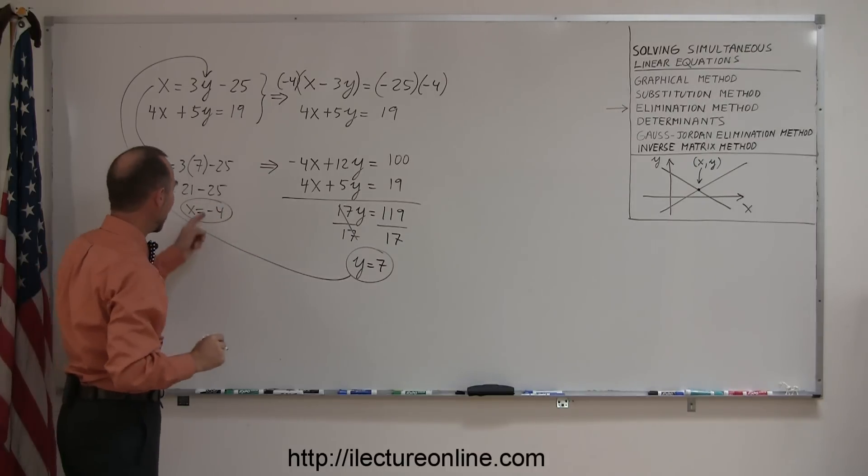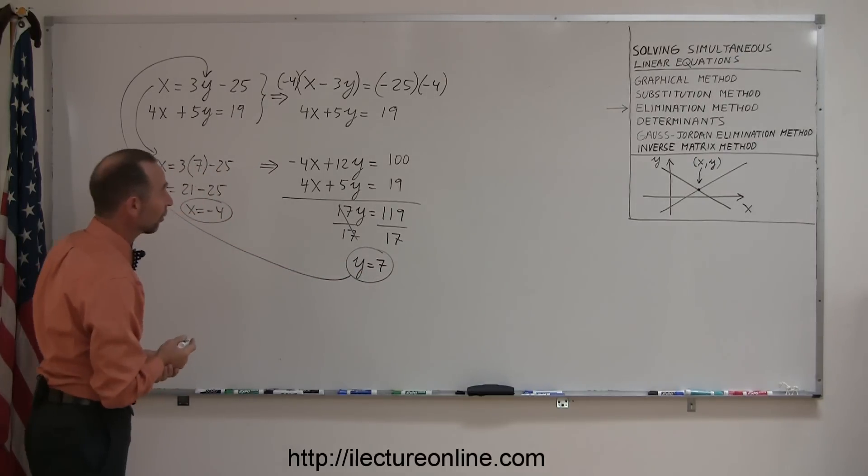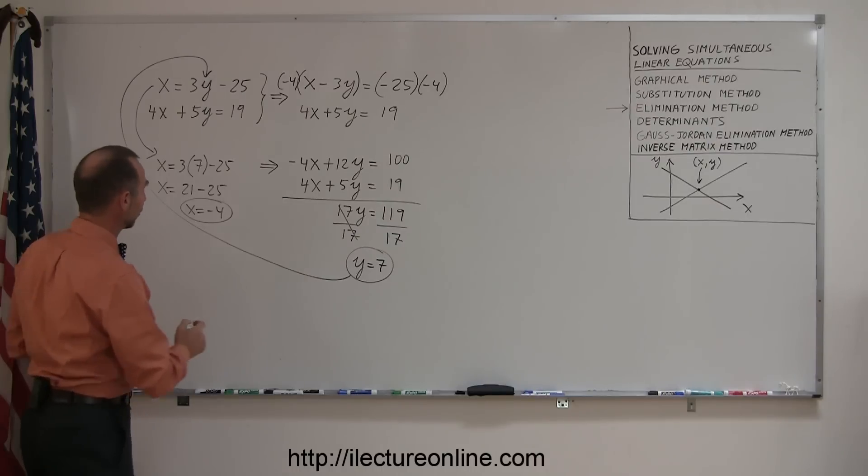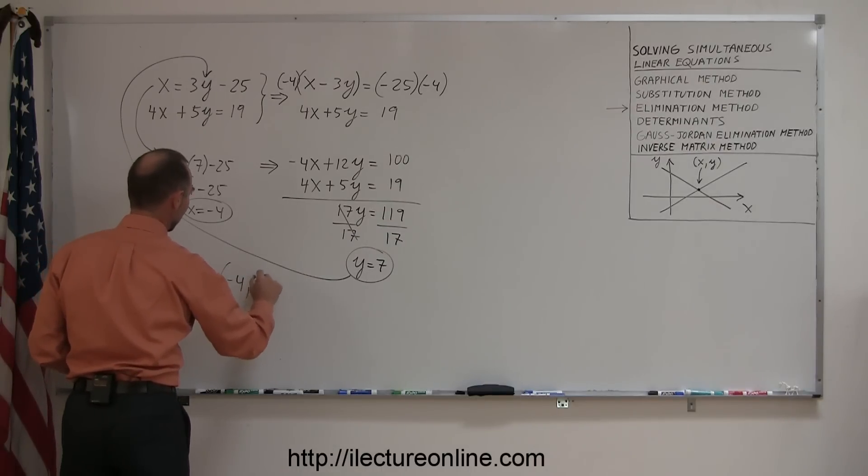So now I have the x and the y value, or the x and y coordinates of the point where the two lines cross. So my solution is minus 4 and 7.